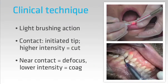Another key aspect of using a diode laser well is the clinical technique. For surgery you should use a light brushing action barely touching the tissue surface. This technique, used with an initiated tip, is how we cut tissue. The small or zero distance from the tip to the surface gives us our greatest intensity. When we want to coagulate, we should be away from contact with the tissue so that the beam spreads out or defocuses. This lowers the intensity below the ablation threshold so we get localized heating and coagulation rather than ablation.